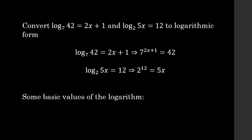Some basic common values of the logarithm regardless of our base: log base b of b is equal to 1, and log base b of 1 is equal to 0. You can check these by converting to exponential form. The first says b raised to the power 1 is equal to b, which is true — any number raised to the first power is just itself. The second says b raised to the power 0 is equal to 1, which is also true — any number raised to the power 0 always gives us 1.